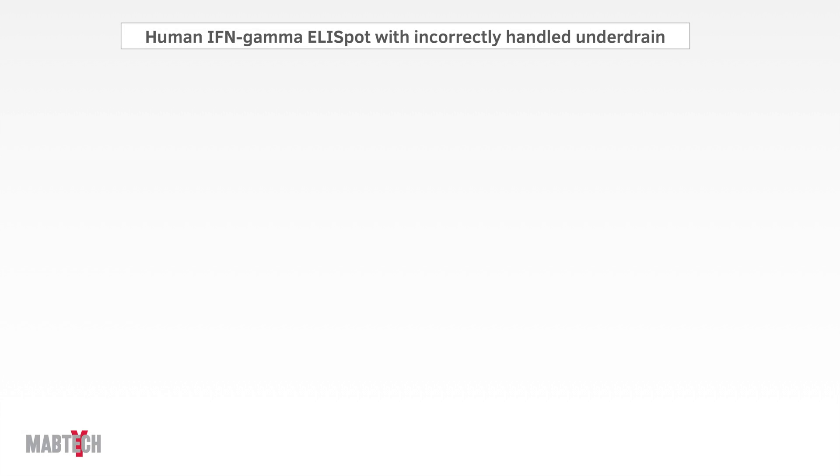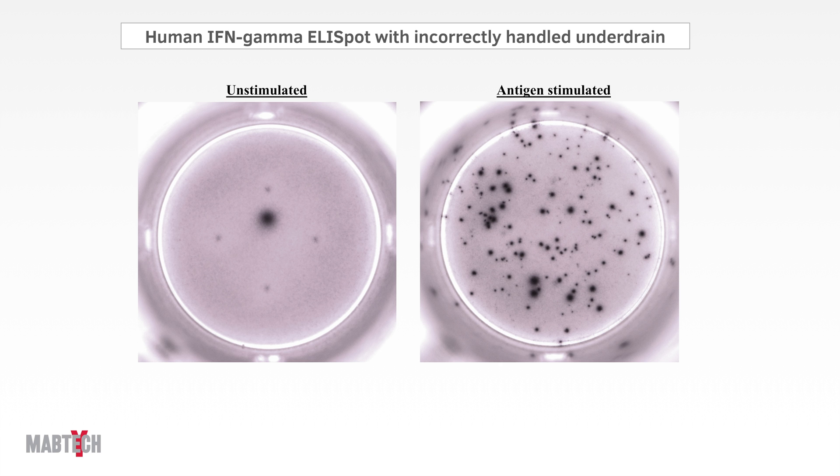Let us together check out some real-life examples of typical underdrain-induced artifacts. Here we have two images of a human interferon-gamma ELIspot that has these typical signs or hallmarks of an ELIspot plate that has not been handled correctly.